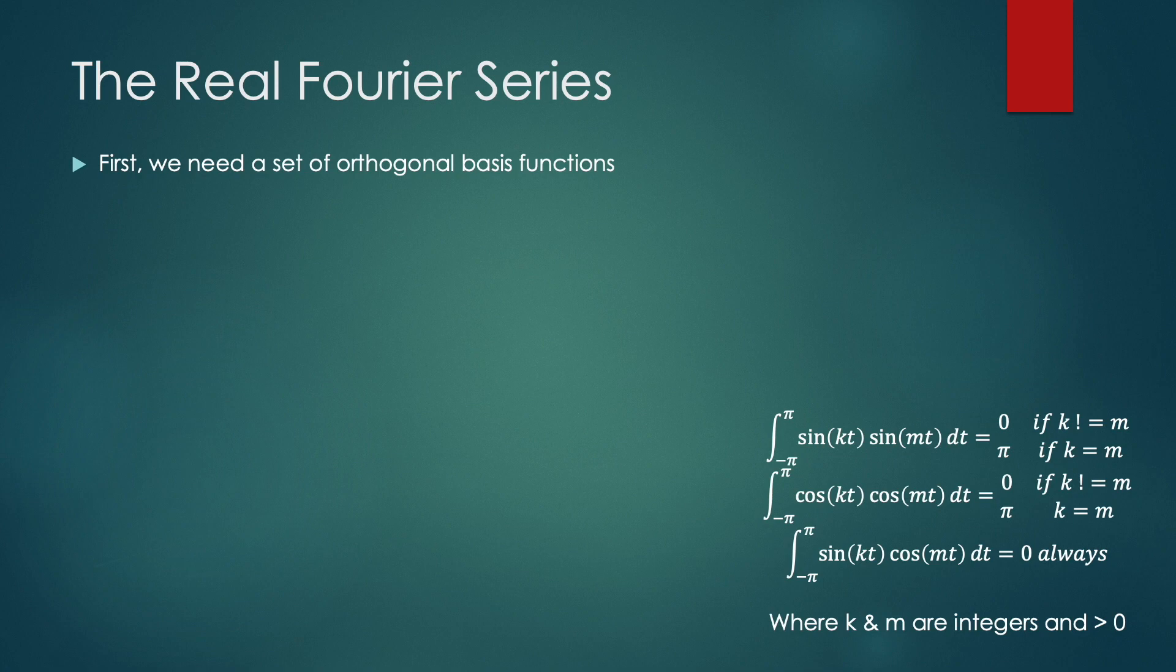And there's two inner products that I actually left out here, but they are important to know. One of them is cos k of t, where k is some positive integer with 1, and the other is sin kt with 1. And both of those inner products are 0. And that's because from minus π to π, cos and sin, that are some positive integer multiple of the base frequency, being 1 over 2π, have an equal amount of area above and below the x axis.